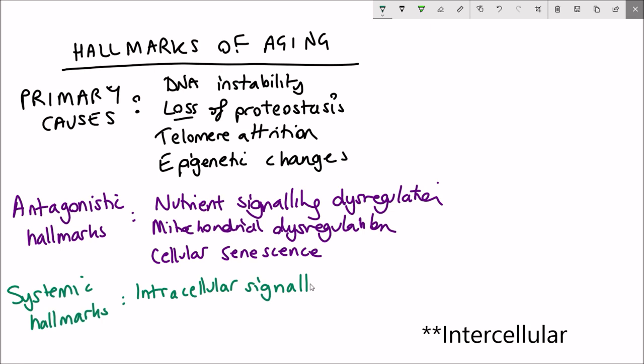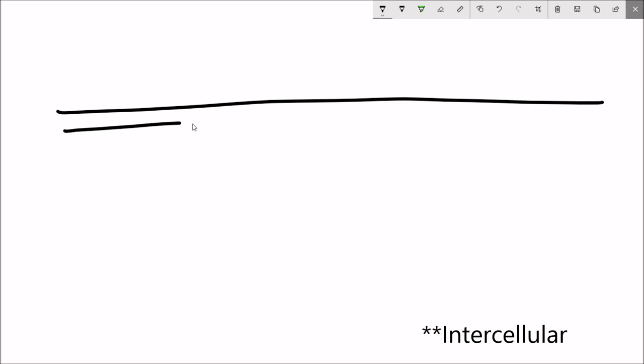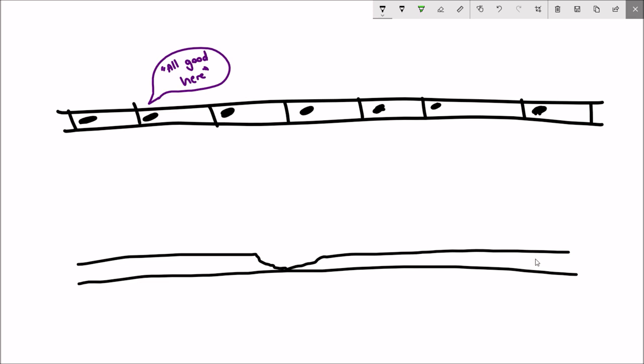The first of these is altered intercellular communication. In ageing this is characterized by an altered extracellular environment and an increase in inflammation.